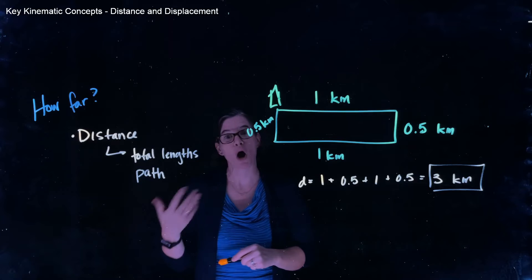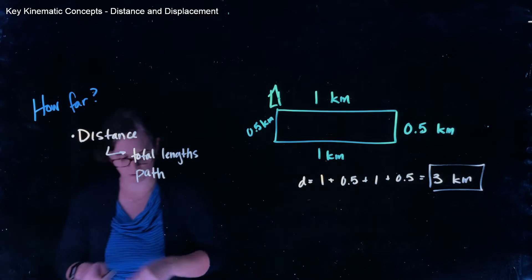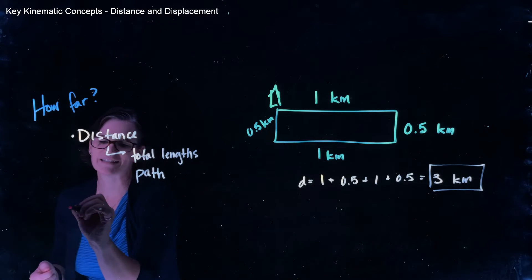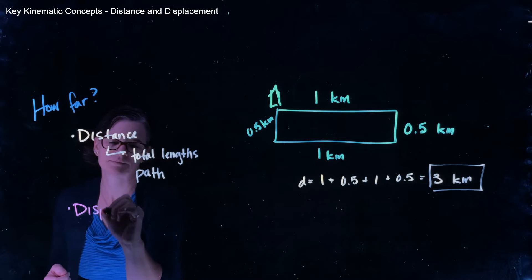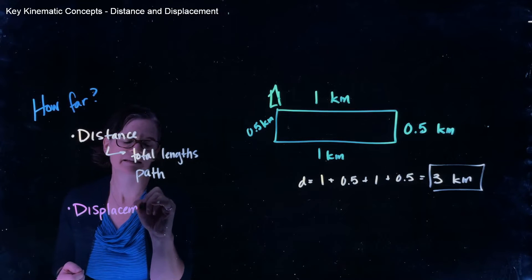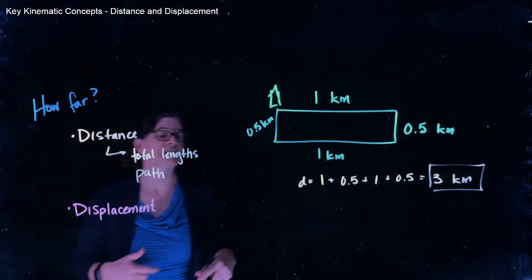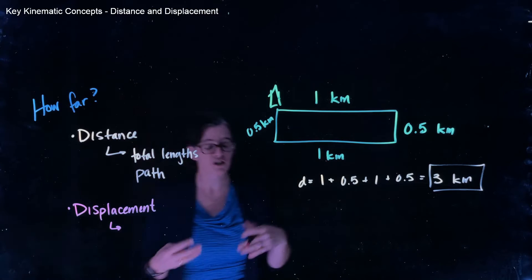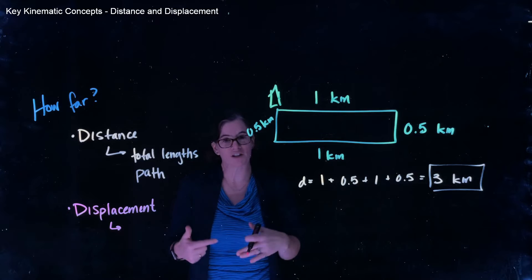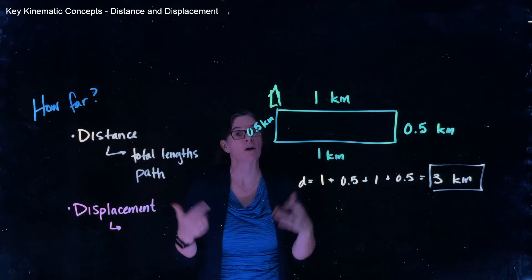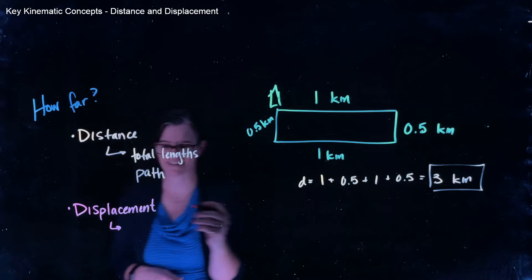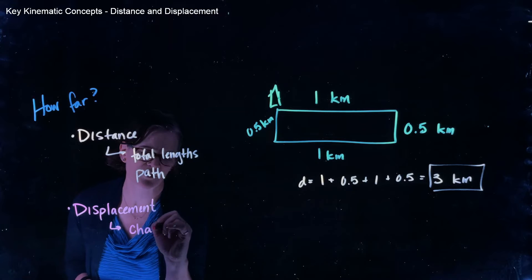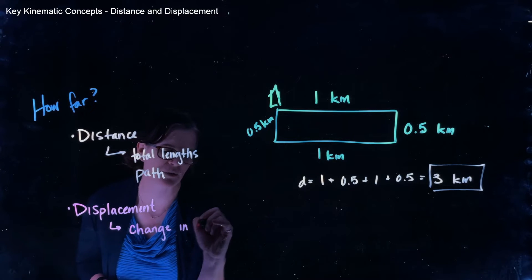The other way we can talk about how far an object moves is what's known as its displacement. The displacement of an object is a description of the object's change in position over the motion I'm interested in. So it's a description of the change in position.